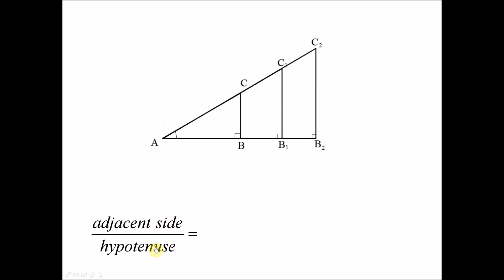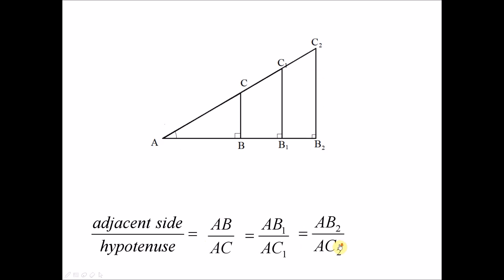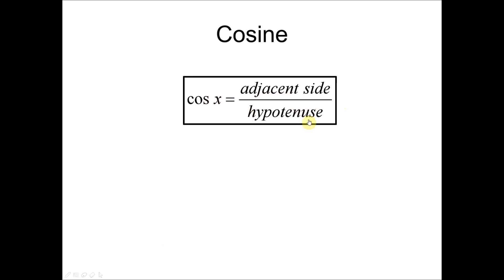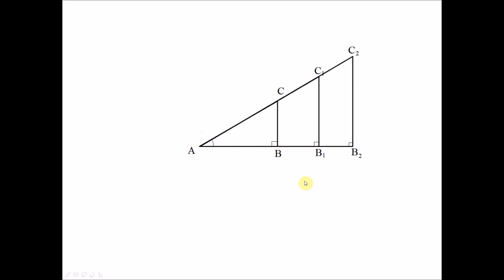The next trigonometric ratio uses the adjacent side over the hypotenuse. Using the same diagram, the adjacent side for the smallest triangle is AB and the hypotenuse is AC. Measuring AB divided by AC and comparing across the larger triangles shows the ratio is always the same. We name this ratio cosine: cosine x equals adjacent side over hypotenuse.